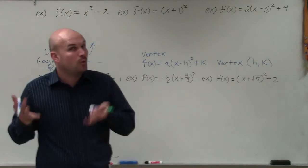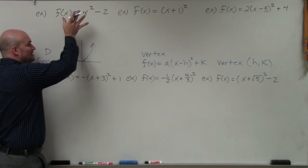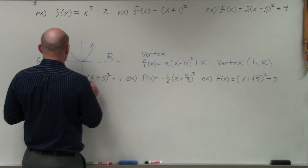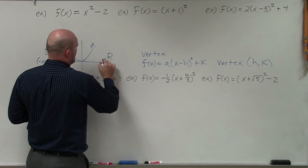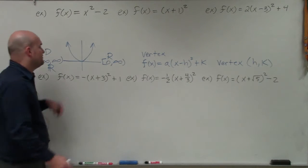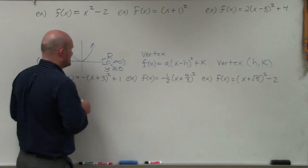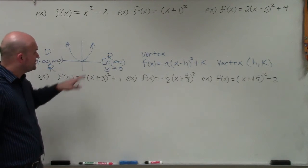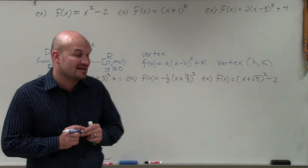The range is the set of all y values that make up the function. Looking at this graph, it goes infinitely up, but it only goes down to 0. So my range is going to be from 0 to infinity, and I'm going to use a bracket because 0 is actually a value in the range. We can also write this as y is greater than or equal to 0 — that's interval notation, or we can use an inequality to represent the range.